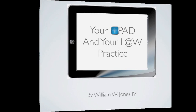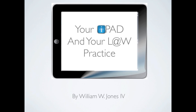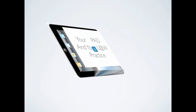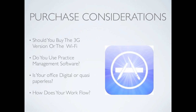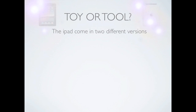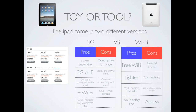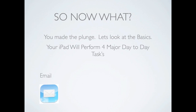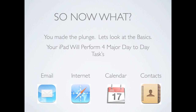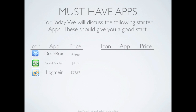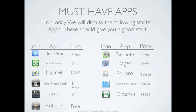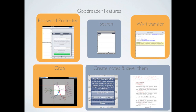Real quick, let me tell you what you missed in parts one and two. In part one, we looked at purchase considerations and what we thought you needed. We also compared the 3G and the Wi-Fi version. Then we looked at the four main things that the iPad will do in your everyday practice, and we gave you a list of all the apps we're going to be talking about.